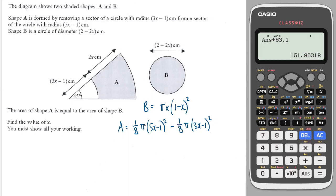And what I can notice straight away that A and B, all the terms in A and B, both have a factor of π. So I'm just going to get rid of that factor of π. And then I'm going to write that 1 minus x all squared is going to equal 1 eighth of 5x minus 1 squared minus 1 eighth of 3x minus 1 squared.